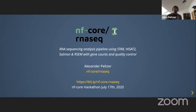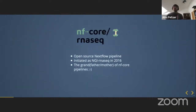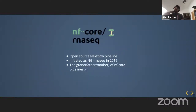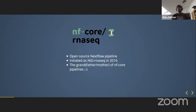NF-Core RNA-Seq is a relatively old Nextflow pipeline. It was started in 2016, back then as NGI-RNA-Seq, from people in the SciLifeLab. Phil Ewels was involved, and there was another person working mostly on the RNA-Seq pipeline back then.